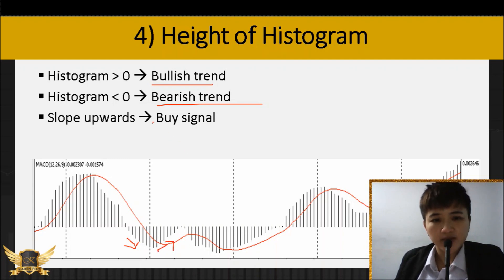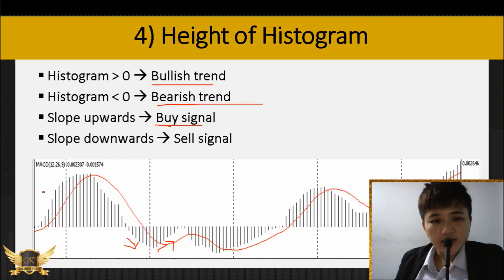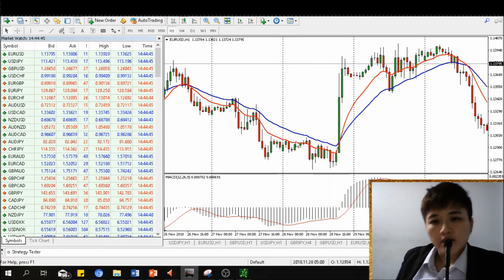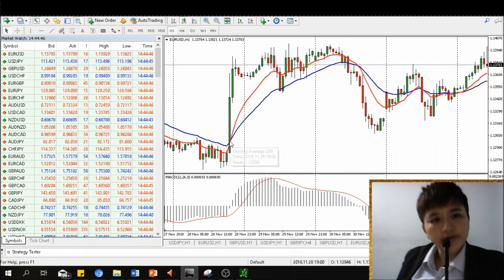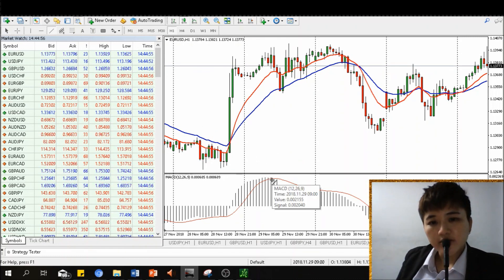When the histogram starts to go from sloping downwards to gradually sloping upwards, that is your buy signal. When the histogram starts to go from sloping upwards to sloping downwards, that is your sell signal. But like I said, don't just rely on this to buy or sell — it's not going to work out without other confirmations.